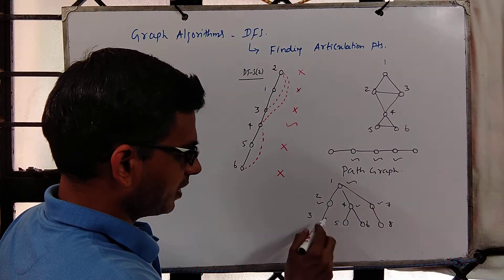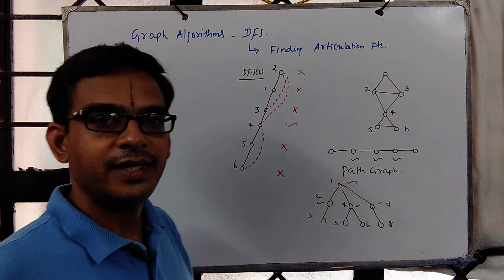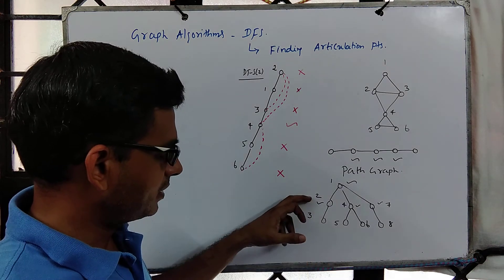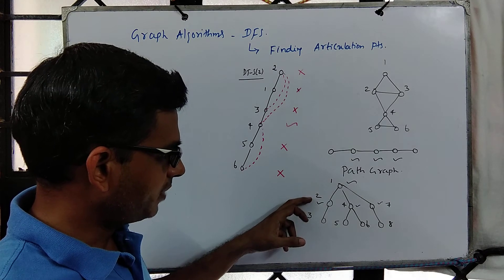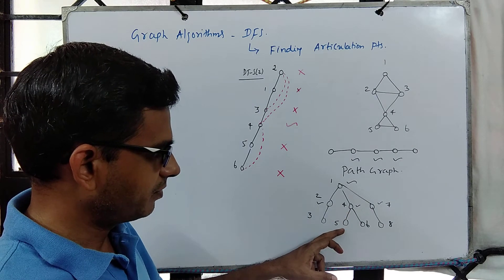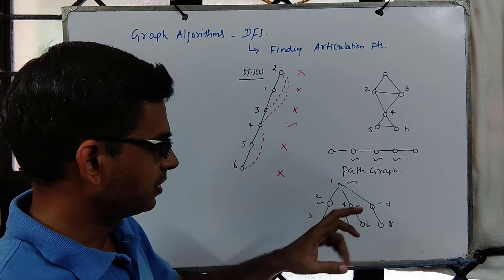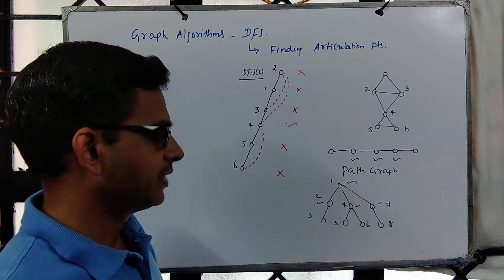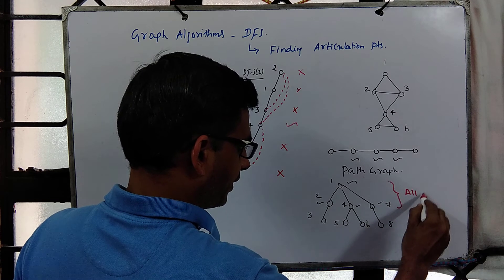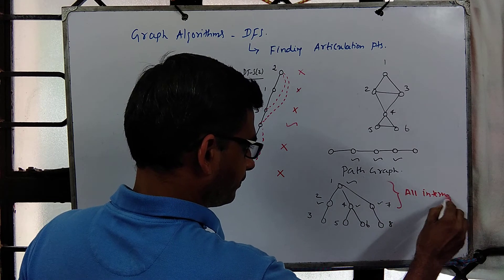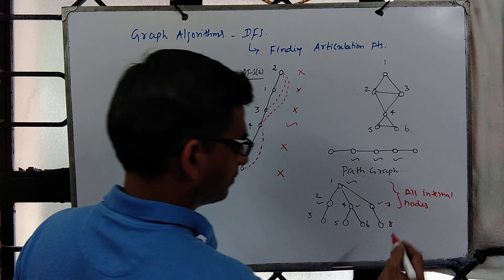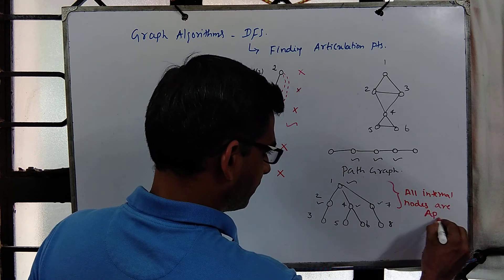The graph is a tree — connected and acyclic — so there are no missing edges because it is acyclic. This vertex is an articulation point because there is no back edge from any descendant to an ancestor. Similarly for other internal nodes. The root has degree at least 2, so the root is also an articulation point. For trees, all internal nodes — that is, all non-leaf nodes — are articulation points.